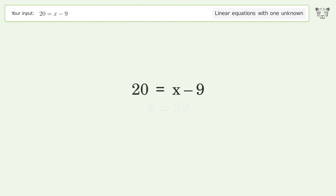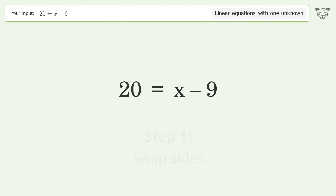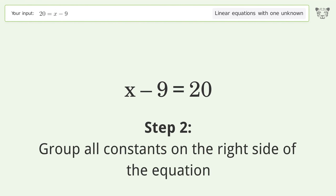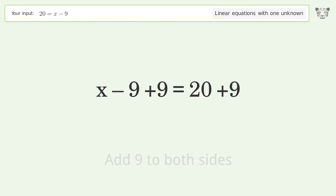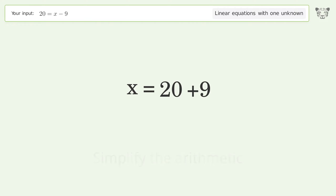Tiger is asked to solve a linear equation with one unknown. Let's solve it step by step: swap sides, group all constants on the right side of the equation, add 9 to both sides, and simplify the arithmetic.